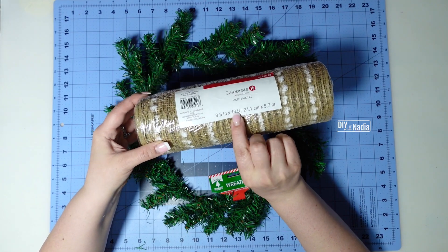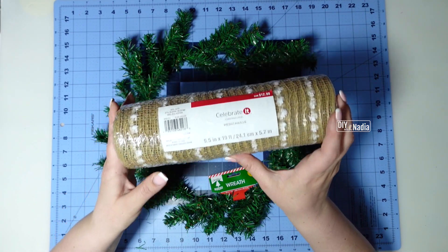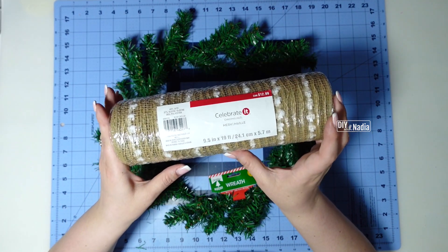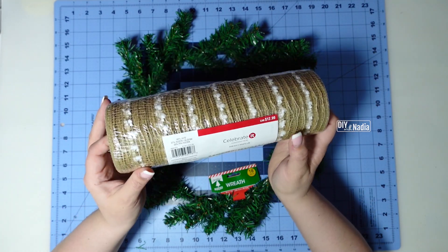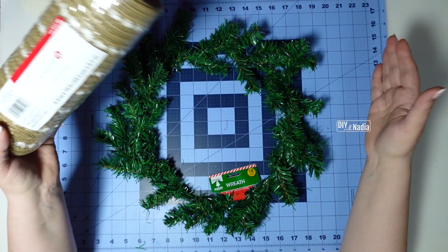So 19 feet is 228 inches. Divide that by eight you're going to get 28.5 inches so I'm going to be cutting this deco mesh into 28 inch little strips.